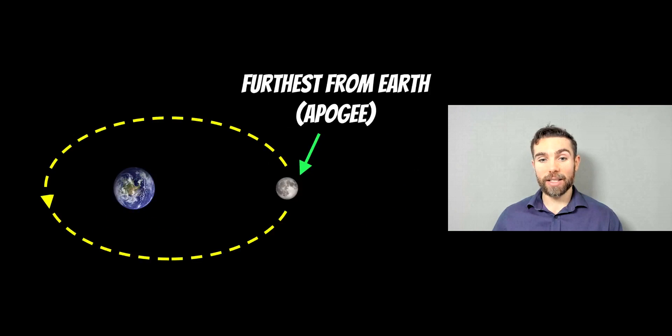Now, the opposite of that is when the moon is at the apogee. And that is the furthest location from Earth on its elliptical orbit. And because of that, because it's the furthest away it can be on its orbit, it's going to appear at its smallest.